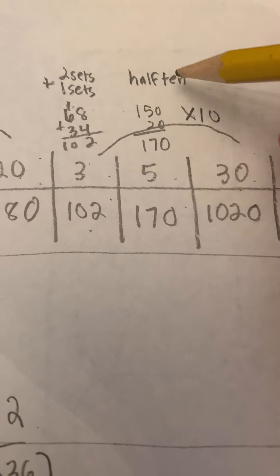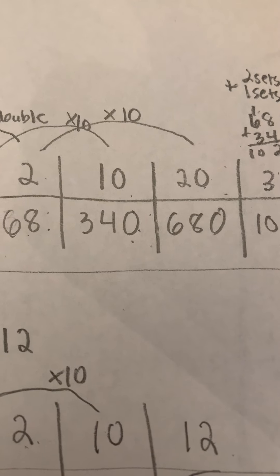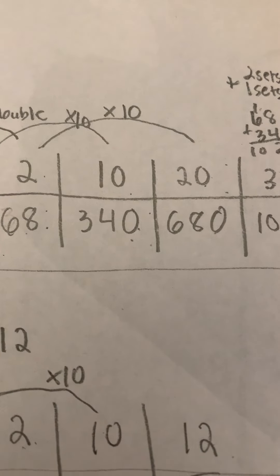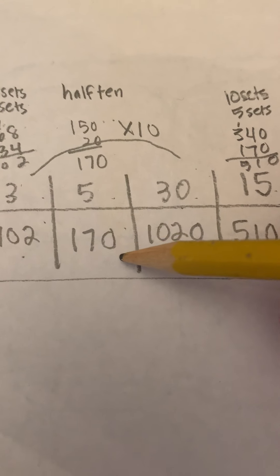5, I did half of 10, so 10 was 300, half of 300 is 150, half of 40 is 20, add those two numbers together, I get 170.